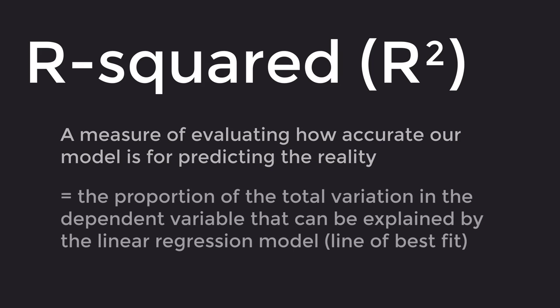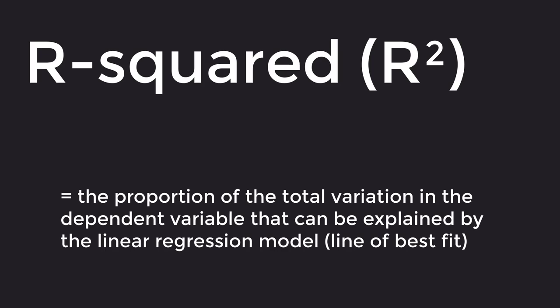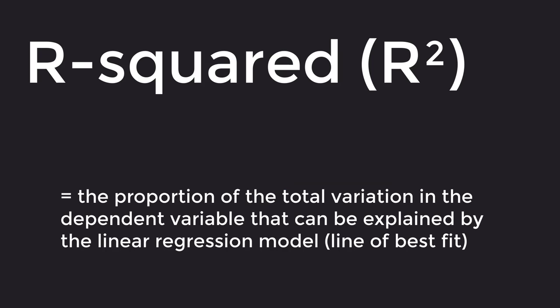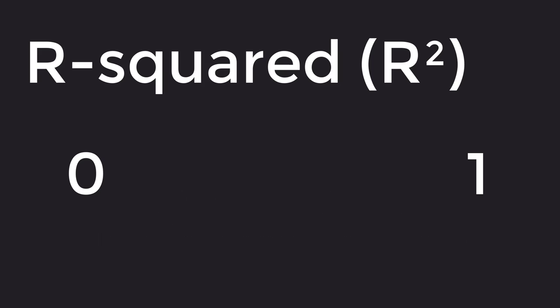R-squared is the proportion of total variation in the dependent variable, which is caffeine content in our example, that can be explained by the linear regression model or the line of best fit. Because it is a proportion, it takes on a value between 0 to 1.